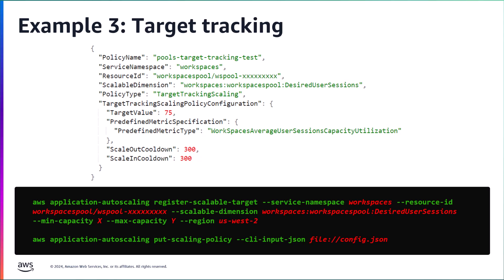The last step is to implement the defined policy using the put scaling policy command, referencing the path to the JSON file you created above. After that, autoscaling takes the required steps to set up the CloudWatch metrics and will begin to take scaling actions to maintain the target capacity utilization level on your pool.